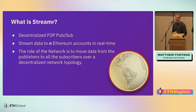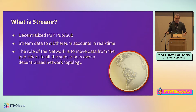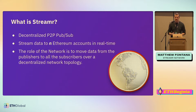So what is Streamr? It is a decentralized peer-to-peer pub-sub network. Data gets streamed to any number of Ethereum accounts in real time. The role of the network is to move data from the publishers to all the subscribers over a decentralized networking topology. If you're familiar with pub-sub channels or topics, Streamr has streams and they mean the same thing.